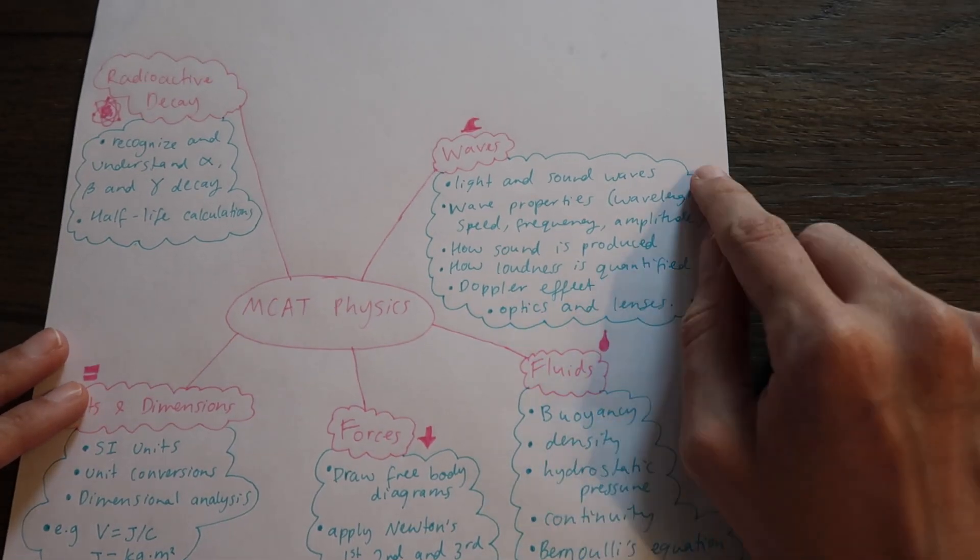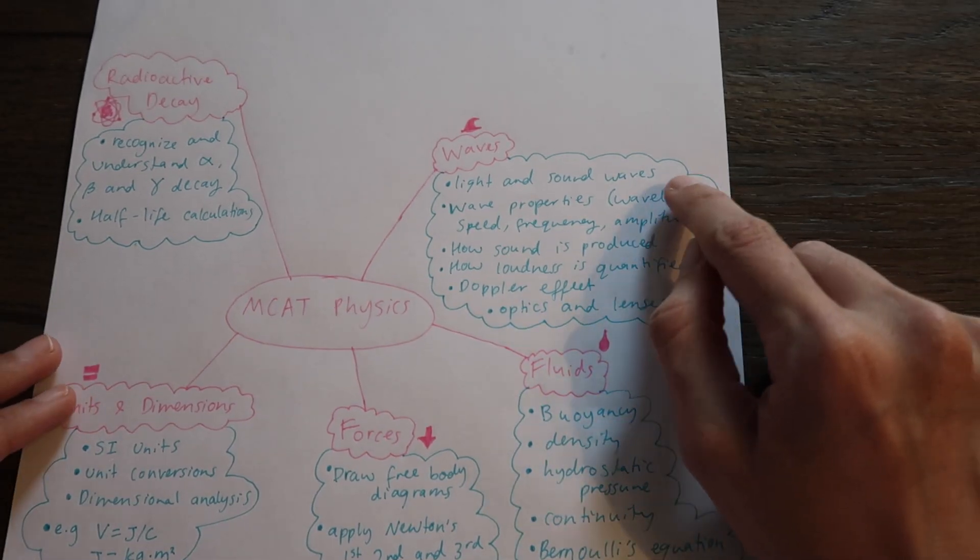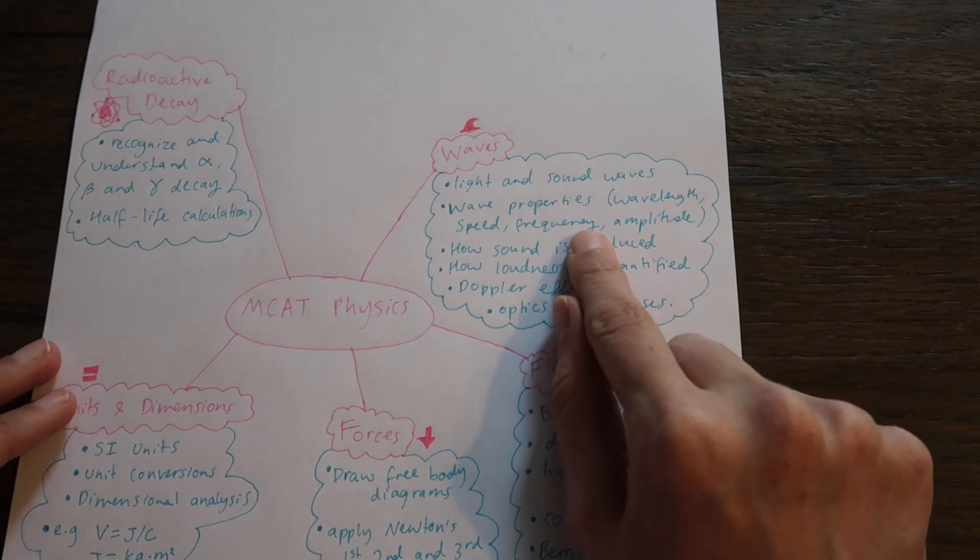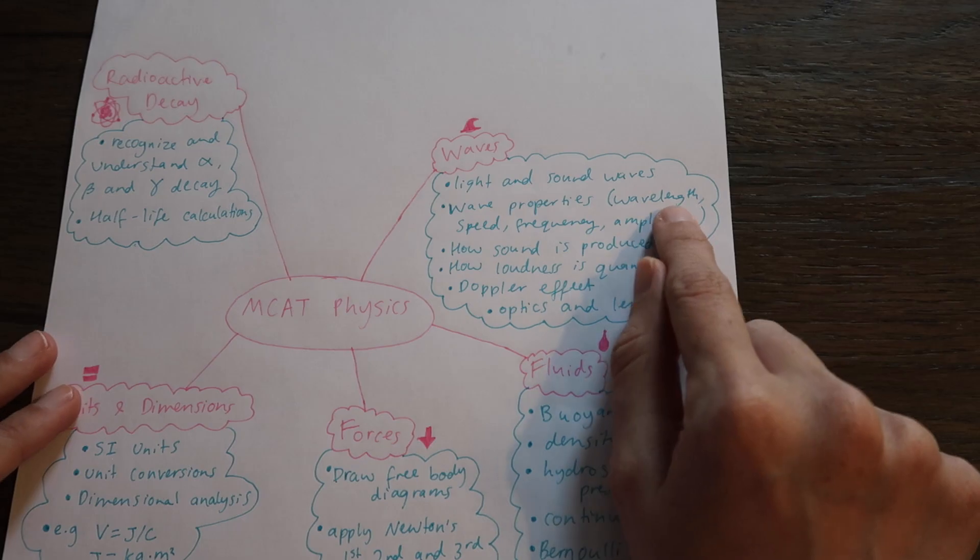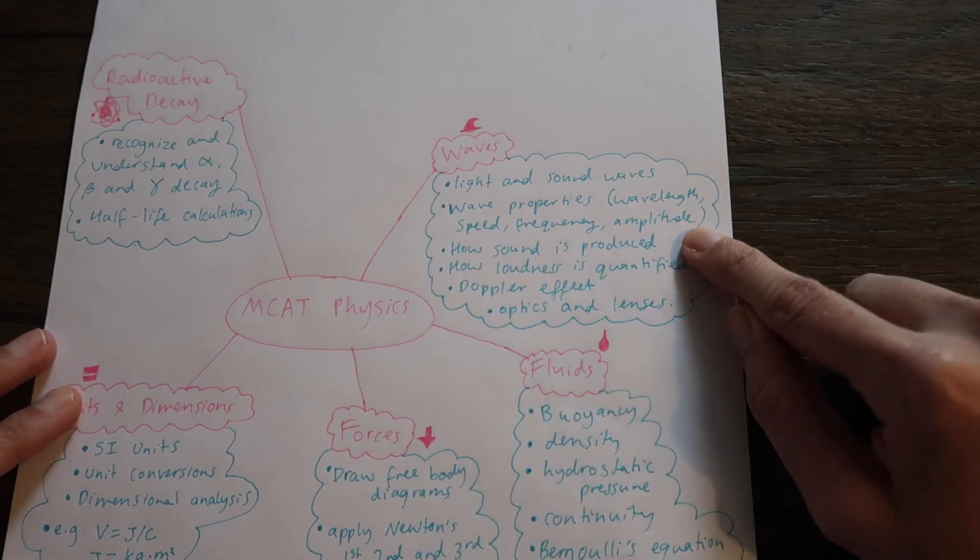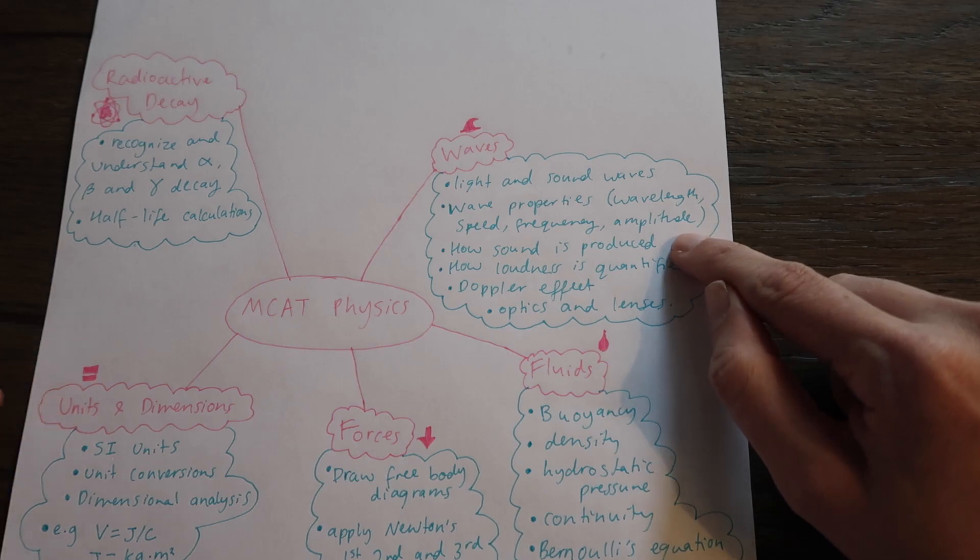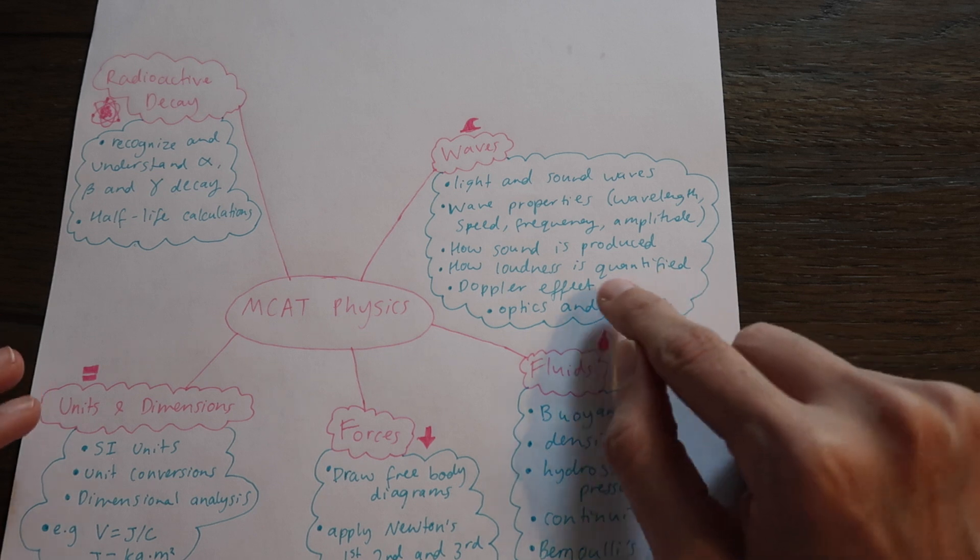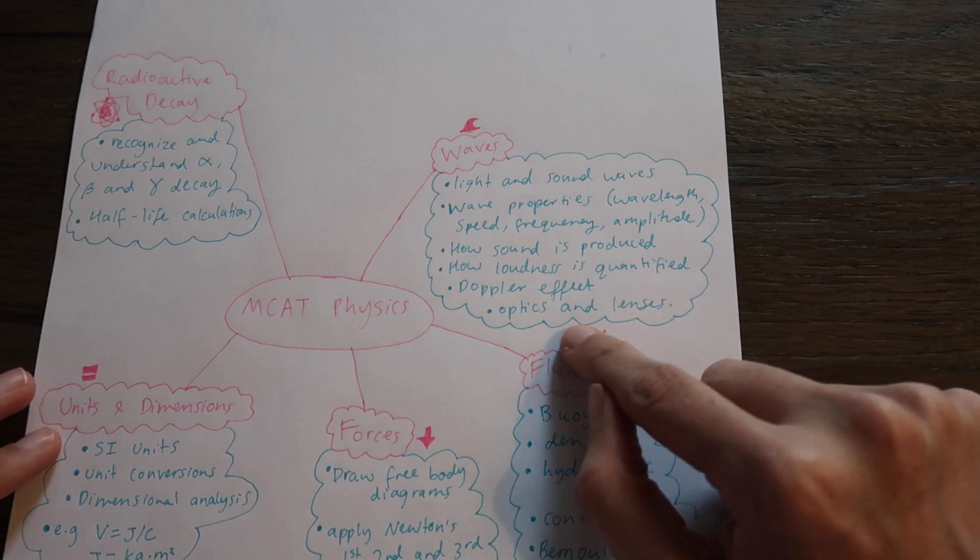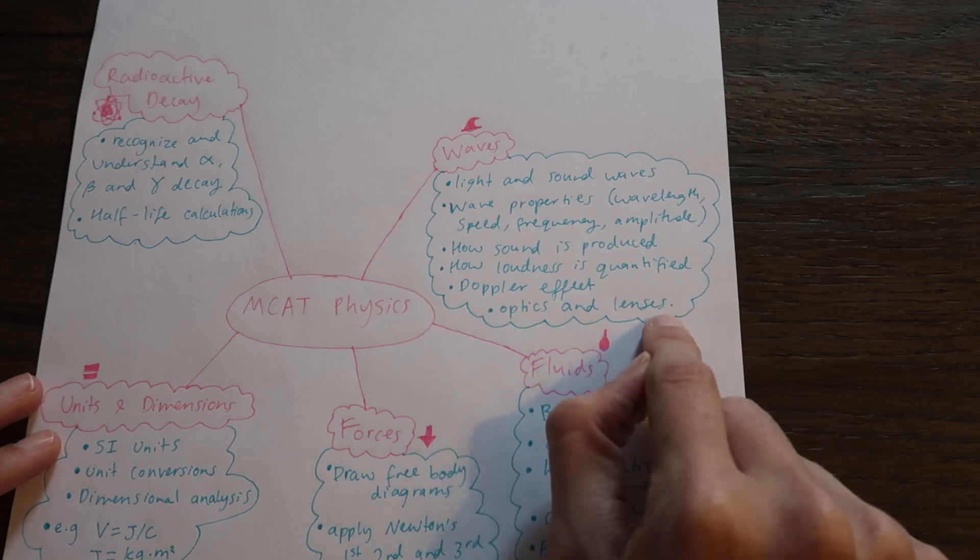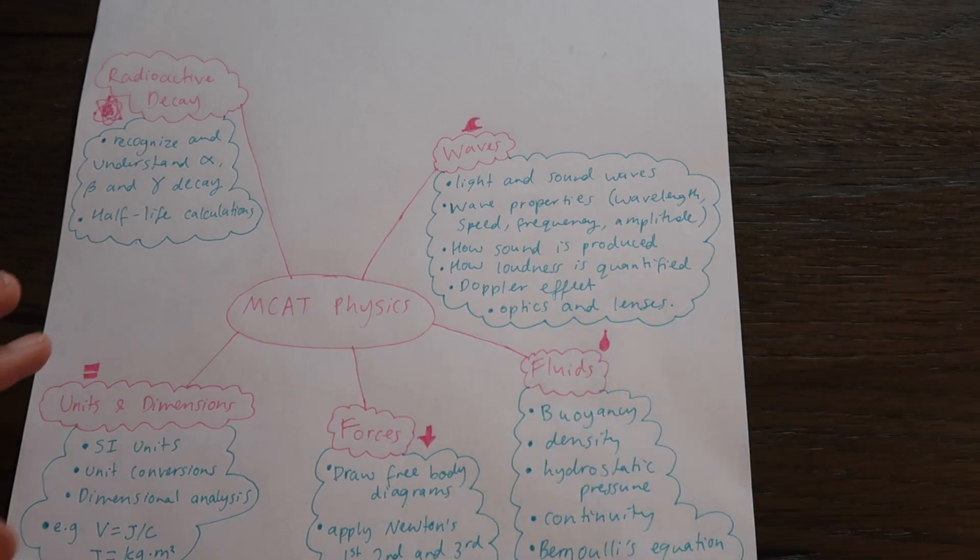For waves you'd want to be able to know about light and sound waves. You'd want to be able to use and apply wave properties such as the wavelength, speed, frequency and amplitude of a wave. You'd want to know how sound is produced and for sound waves how loudness is quantified. You'd want to know about the Doppler effect and also optics and lenses. Of course this last one would be applicable to things like the human eye.